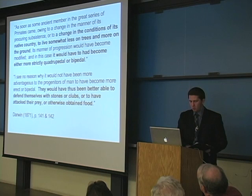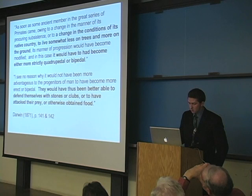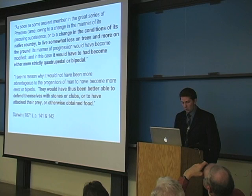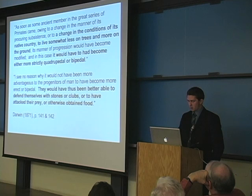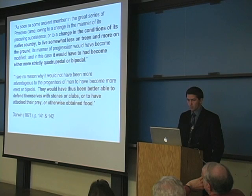Whatever explains humans' more strictly bipedal condition must also explain the more strictly quadrupedal condition of chimps and gorillas. As Darwin pointed out, the circumstances must have been living somewhat less in trees and more on the ground. And as he further pointed out, with bipedal posture early hominins would have been better able to defend themselves with stones or clubs, or to have attacked their prey, or to have otherwise obtained food. In short, the natural selective pressure for either bipedality or knuckle walking in the CGH LCA must have been related to a change in the conditions of its native country, causing either rising subsistence pressure and greater foraging on the ground, or rising predation pressure while on the ground.